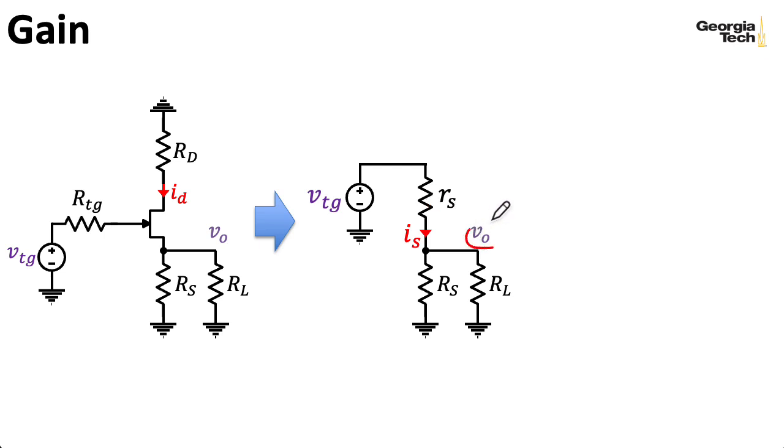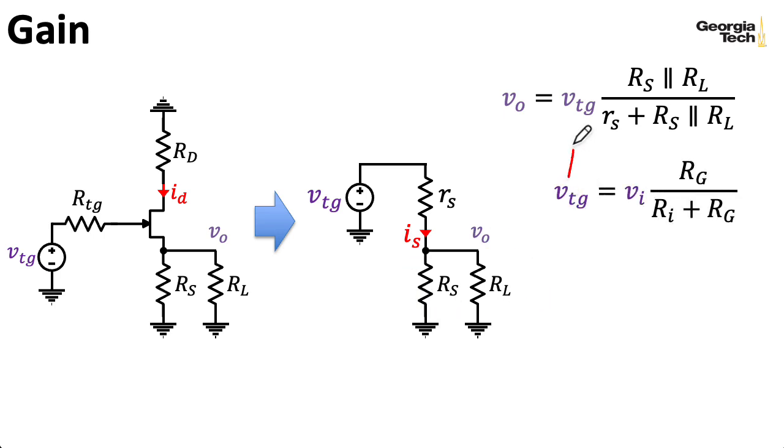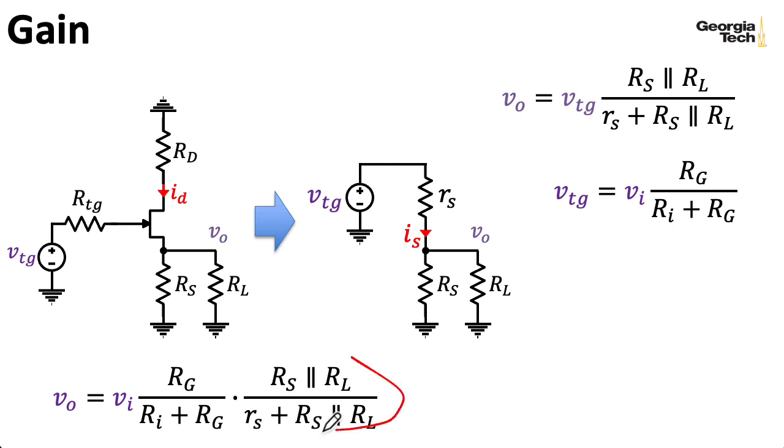So I can easily find Vout using just a voltage divider formula. VTG is getting divided across RS in parallel with RL. And I can combine that with our formula for VTG from the previous slide to write the output voltage in terms of the input voltage like this. And I'm going to take this multiplier here and call it AV in a later slide. So just giving you a heads up on that.